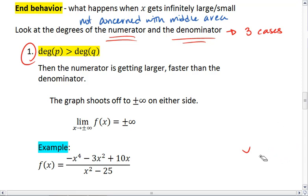It'll be easier to see this with an example. Let's look at f(x) = (-x^4 - 3x^2 + 10x)/(x^2 - 25). The degree of the numerator is 4, and the degree of the denominator is 2.